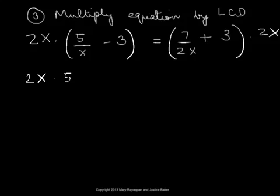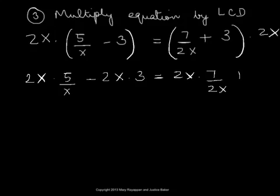And that would give us 2x times 5 over x minus 2x times 3 equals 2x times 7 over 2x plus 2x times 3.